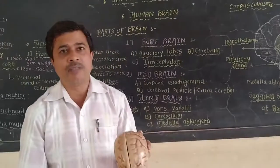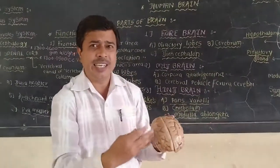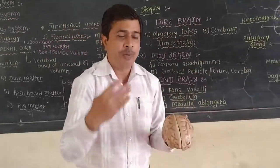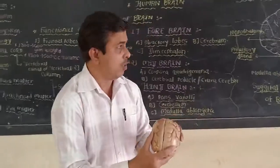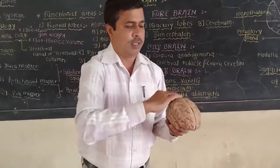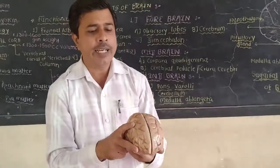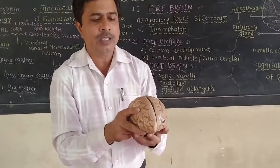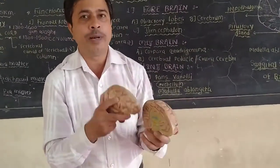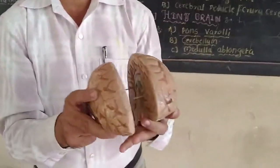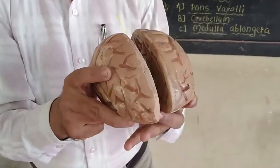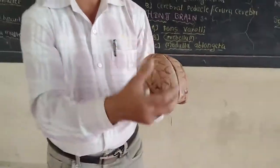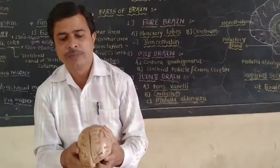The number of gyri and sulci is related to a person's intelligence — the more gyri and sulci, the more intelligent that person will be. The cerebrum is divided into two halves by the median sulcus, and these two halves are known as the cerebral hemispheres. The word 'hemi' means half, and 'sphere' means rounded, so these are the two half-spheres of the cerebrum.